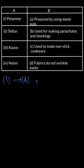Then the next term in column A is teflon. So for teflon the correct phrase is this is used to make the non-stick cookware. So here we can write that 2 is matched with C.